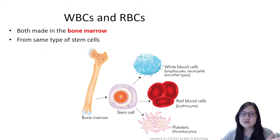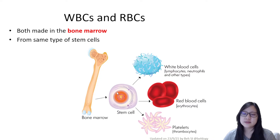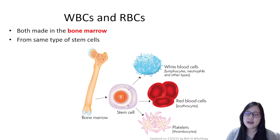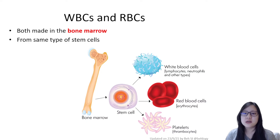White blood cells and red blood cells are both made in the bone marrow from the same types of stem cells — specifically the mesenchymal stem cell. These are multi-potent stem cells that form your bone marrow.